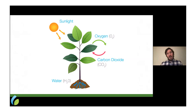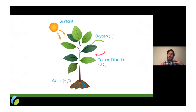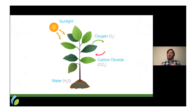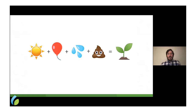It starts with photosynthesis — that beautiful process happening all over the planet, thanks to which we're here today. Plants breathe in carbon dioxide (carbon and oxygen), take up water (hydrogen and oxygen), and stitch those three ingredients — C, H, and O — together using energy from the sun. They build their bodies, their biomass, and a whole range of other compounds, releasing oxygen in the process. But there's an important ingredient missing from this picture: nutrition.